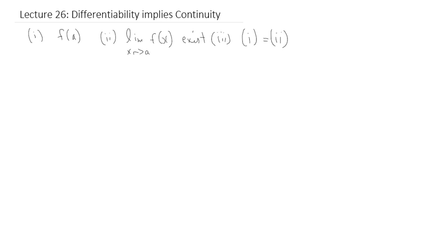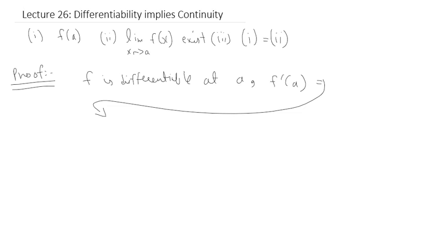The problem is that when you have a function that's differentiable, it kind of automatically implies continuity. To give a short proof of that: if f is a differentiable function and f is differentiable at a, then f'(a) has to be represented by the limit of f of x minus f of a divided by x minus a, as x approaches a.